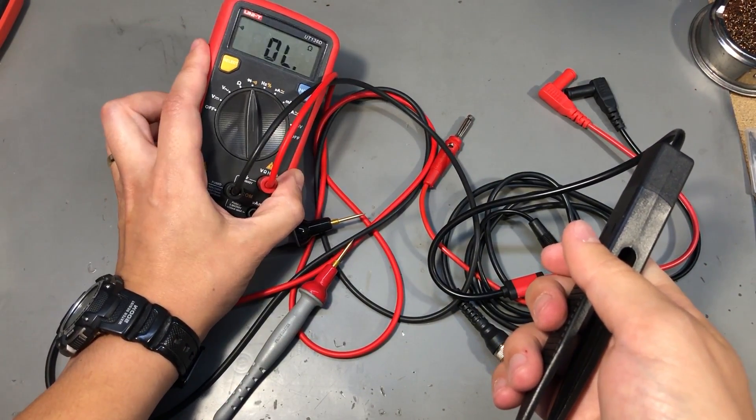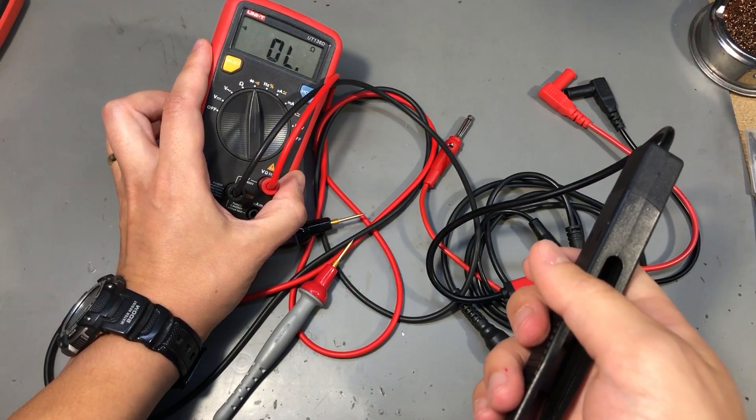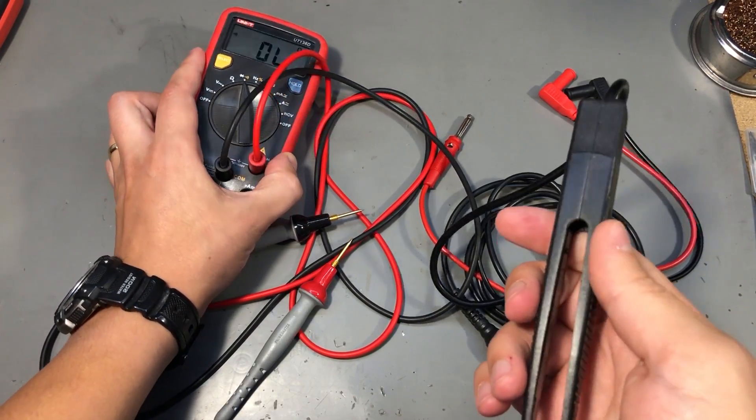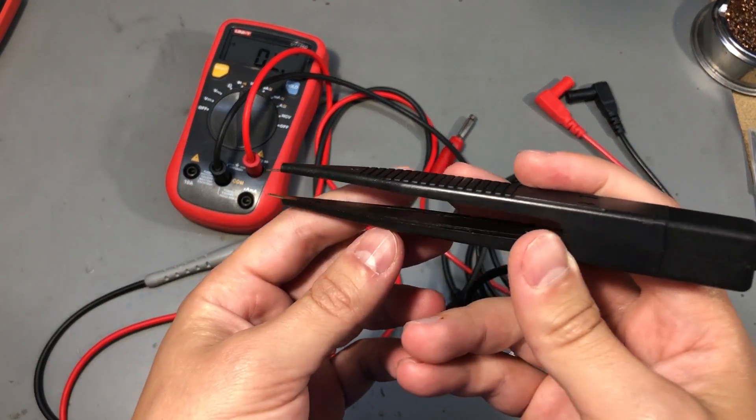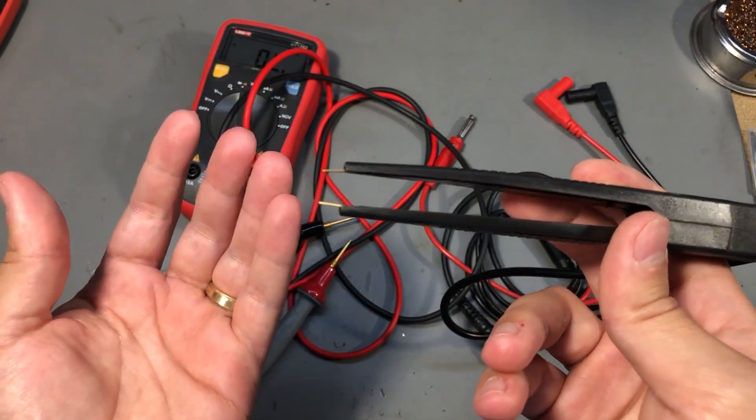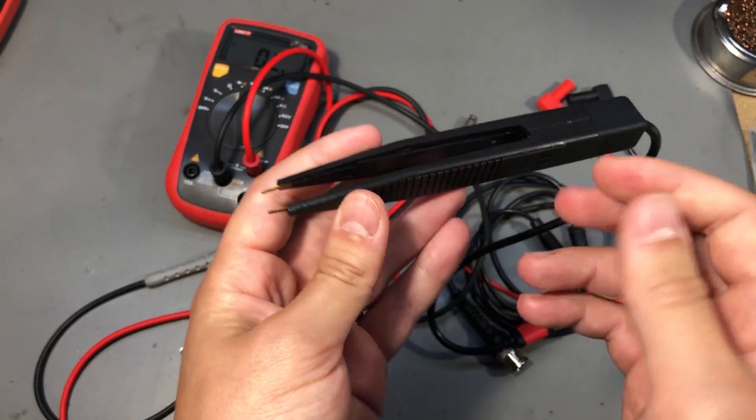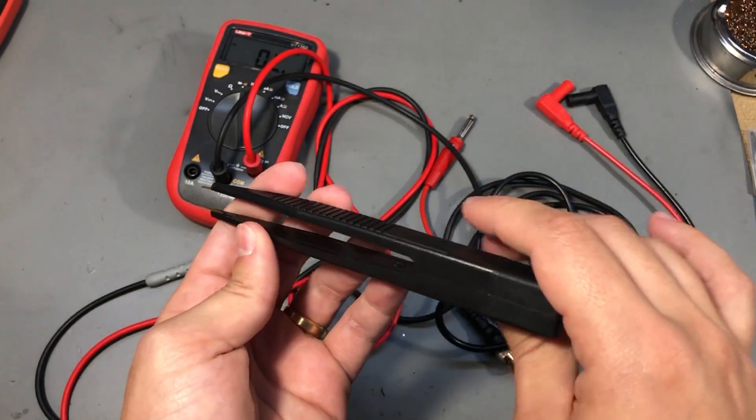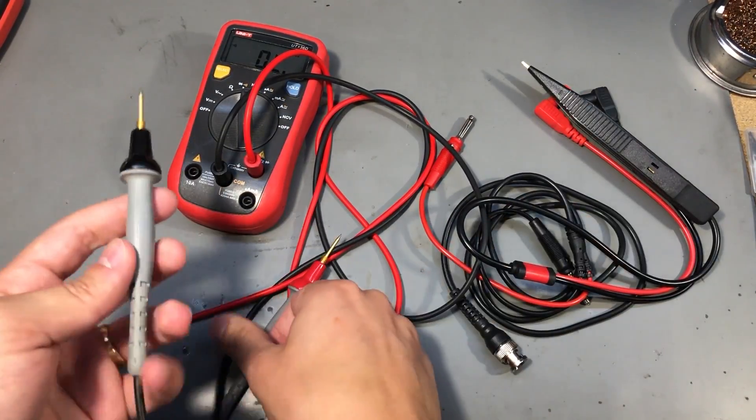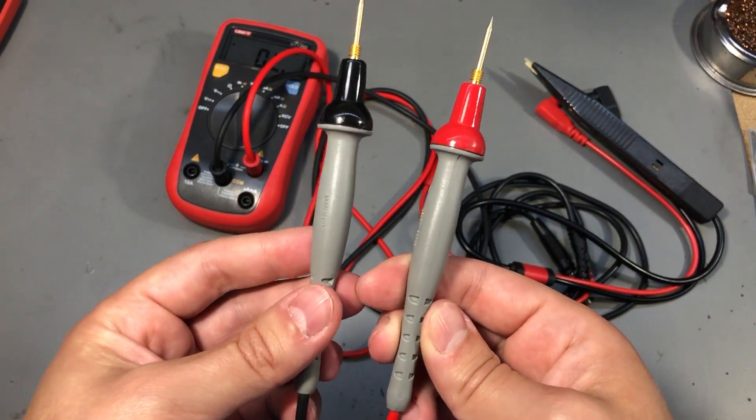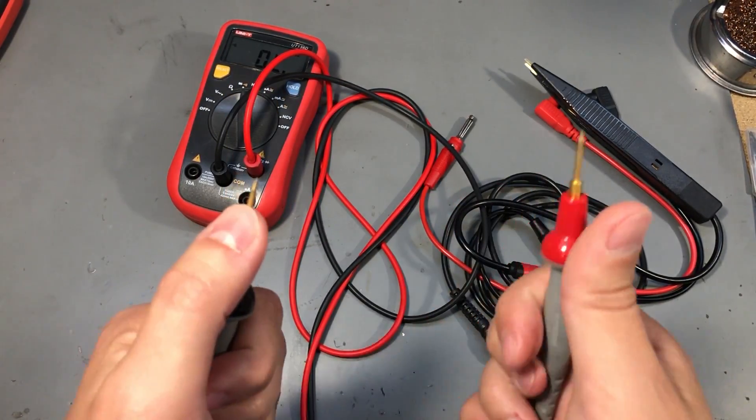This is not latched so it would be a good indication of the quality of the probe contacts because when you have a good probe with nice gold plating it will result in less interruptions in the continuity tester, while if you have a bad connection there will be a lot of interruptions. So as a control we'll use these Probe Master probes which are super high quality.